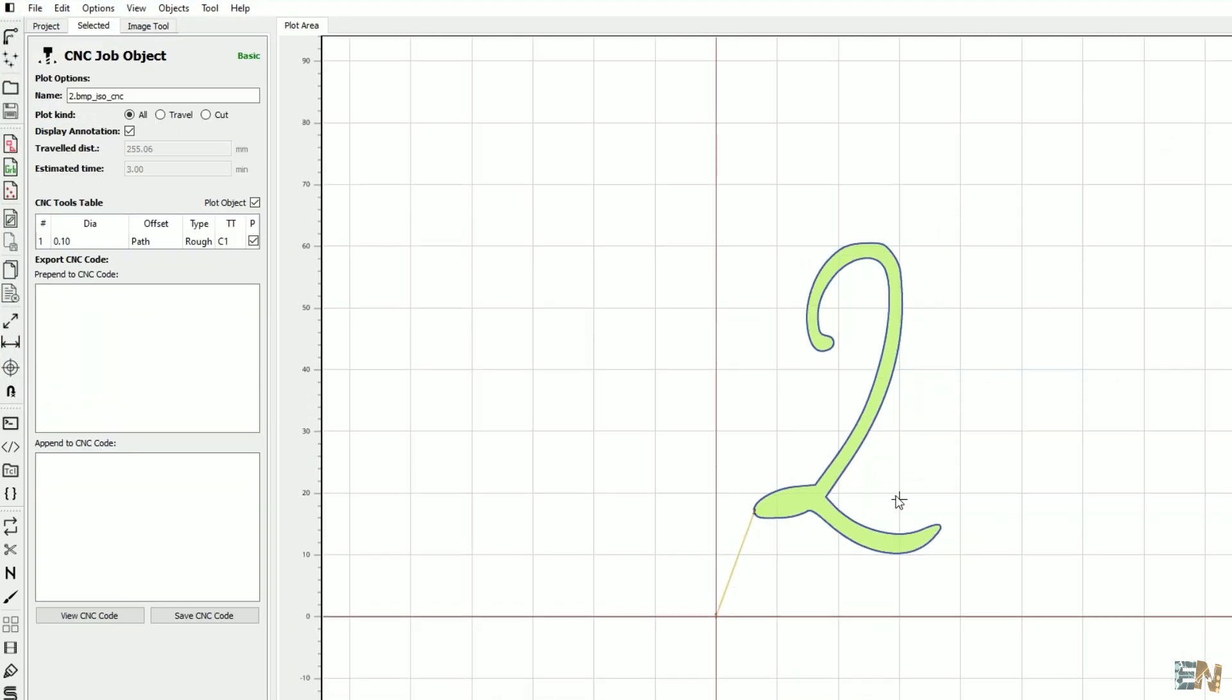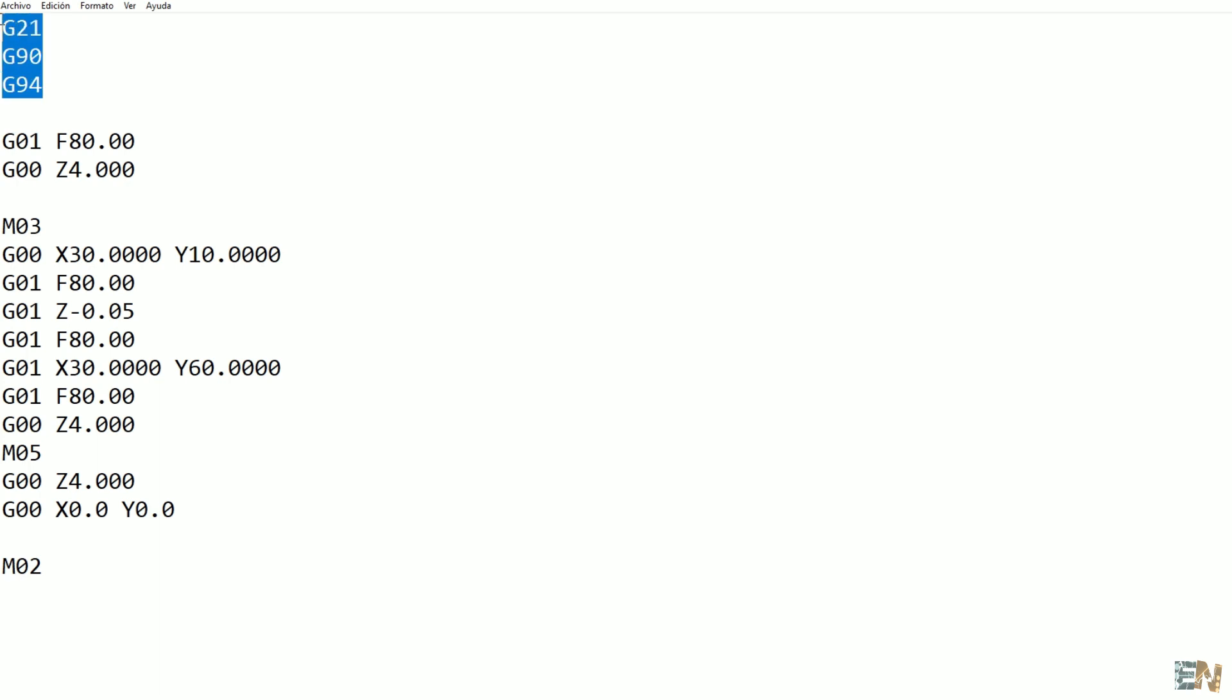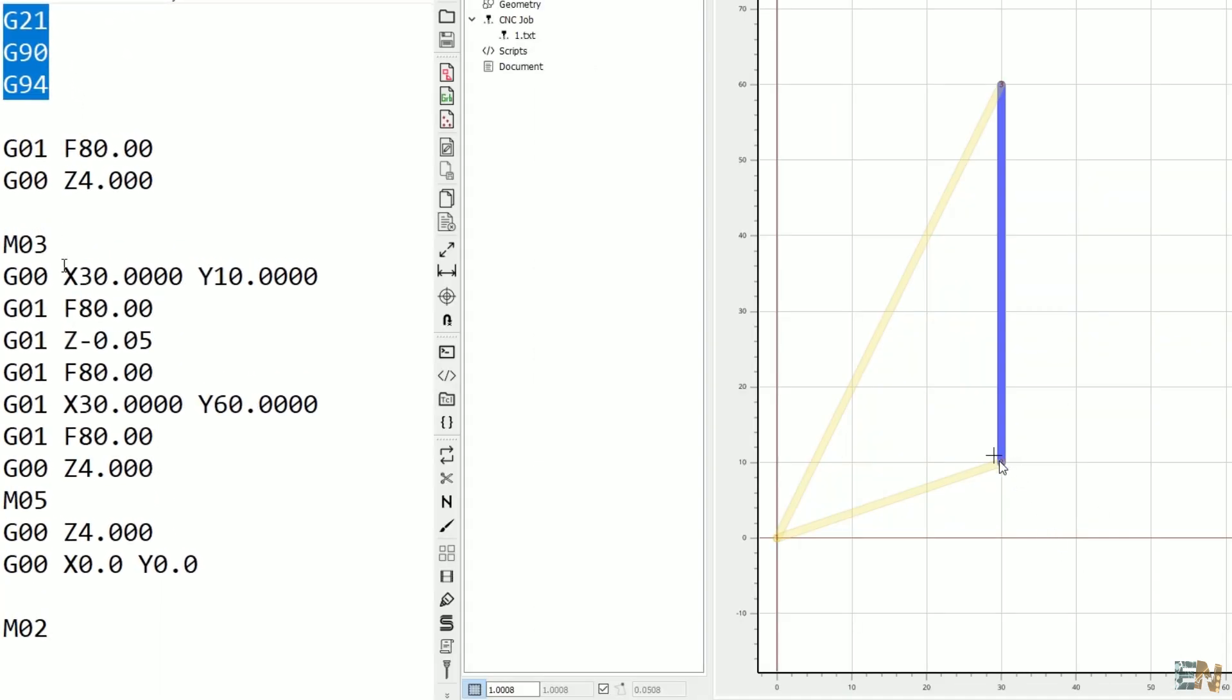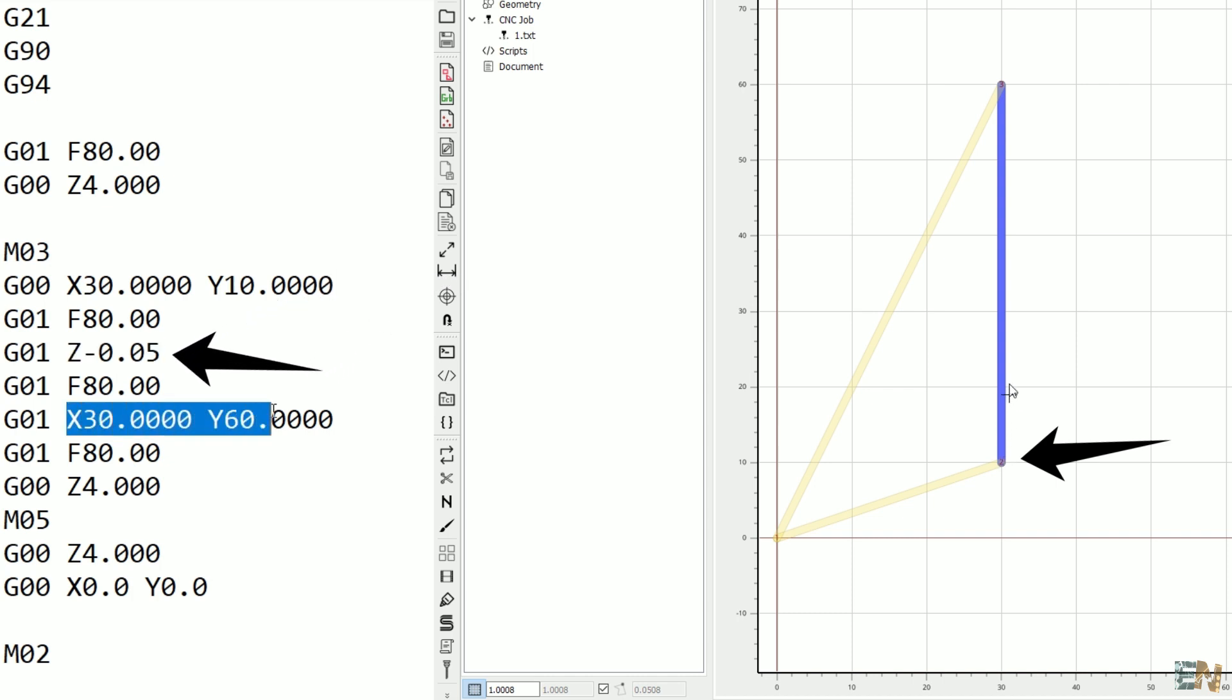But if you want some simple numbers, this is what I've made. Open a new text document and start writing the coordinates. First we use the G commands to home the machine. Then for example for the number 1, we go to x3 and y1. Then we lower the drill to minus 0.05mm and we start engraving. Then we go to 3 and 6 and that's it.